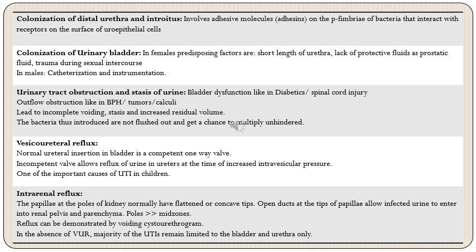The second mechanism of reflux occurs in the kidney — intrarenal reflux. The papillae at the poles of the kidney normally have flattened or concave tips compared to the mid-zones where papillae have convex tips. These flattened or concave tips at the poles have open ducts allowing infected urine to enter the renal pelvis and parenchyma. Therefore areas of reflux are more common at the poles, and this intrarenal reflux can be demonstrated by voiding cystourethrogram.